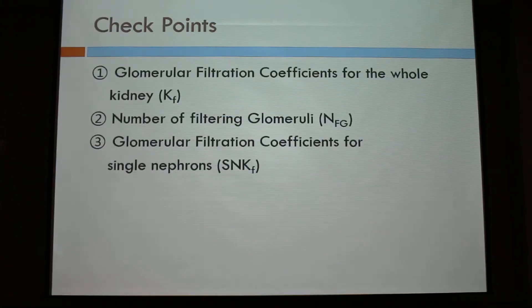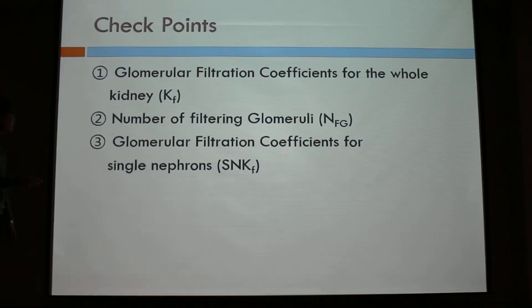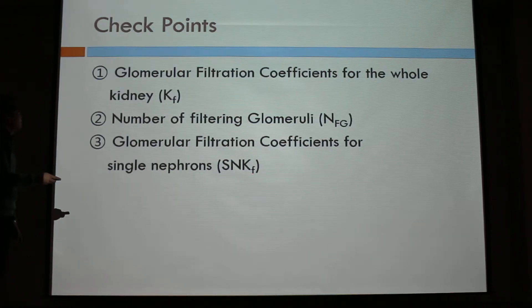The checkpoints we're going to look for are: first, the glomerular filtration coefficient for the whole kidney, KF; second, the number of filtering glomeruli, NFG; and last, the glomerular filtration coefficient for single nephron, which they named SNKF. The first one is for the whole kidney, and the last one is for the single nephron.